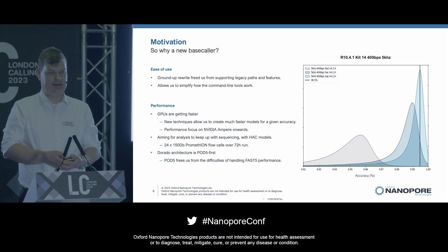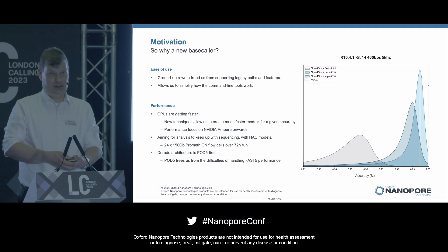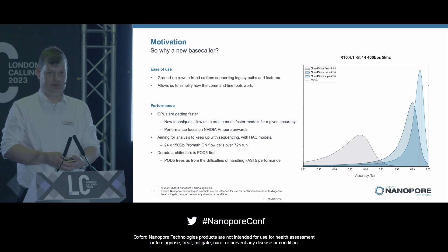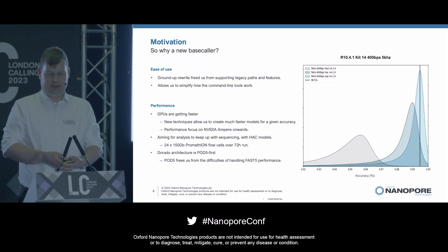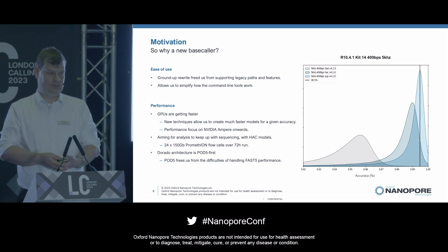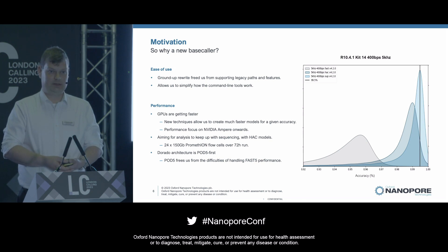Performance is a really big thing. GPUs are getting faster all the time — we've moved some of our platforms to the new Ampere architecture GPUs, and we want to make sure we're getting every ounce of performance out of those devices. We've set ourselves some fairly high-bar performance goals. What we wanted was a base caller where you can have 24 flow cells running in a PromethION, generating 150 gigabases each over a 72-hour run, and Dorado keeps up with high-accuracy base calling throughout. With Dorado 0.3, we've now hit — and exceeded — that performance goal, including for the 5 kHz run condition.